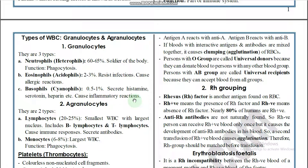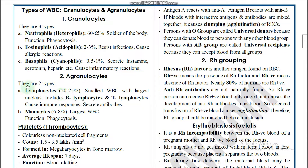Basophils secrete histamine, serotonin, and heparin, causing inflammatory reactions. The granulocytes are neutrophils, eosinophils, and basophils, while the agranulocytes are lymphocytes and monocytes.